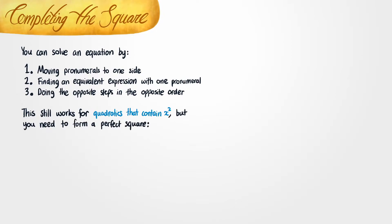This technique still works just fine for quadratics. In case you're unsure of what a quadratic is, a quadratic is just an expression that may contain x squared as well as a normal x. For example, you could have something like 2x squared minus 3x plus 4 equals 0, or you could have something like x squared minus 7 equals 0. Those are both quadratics.